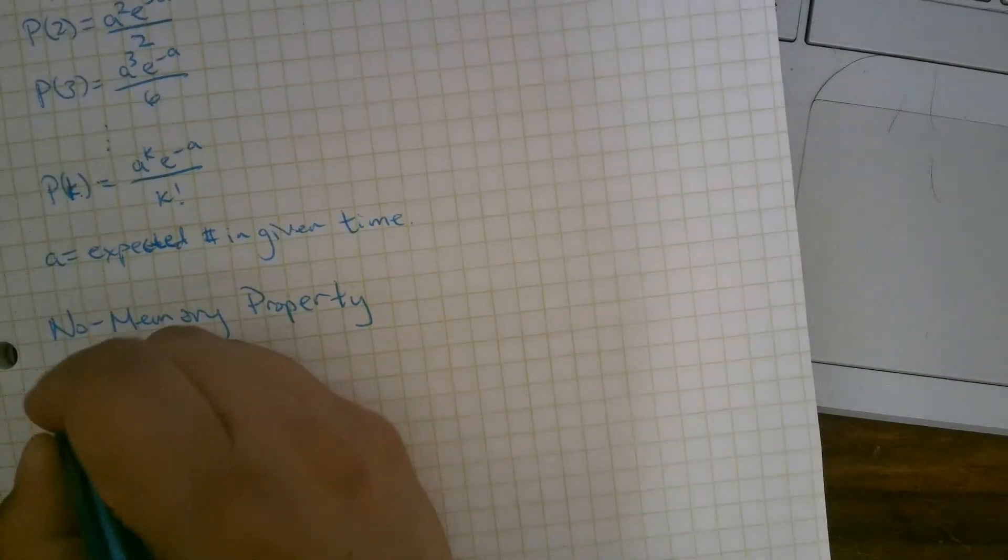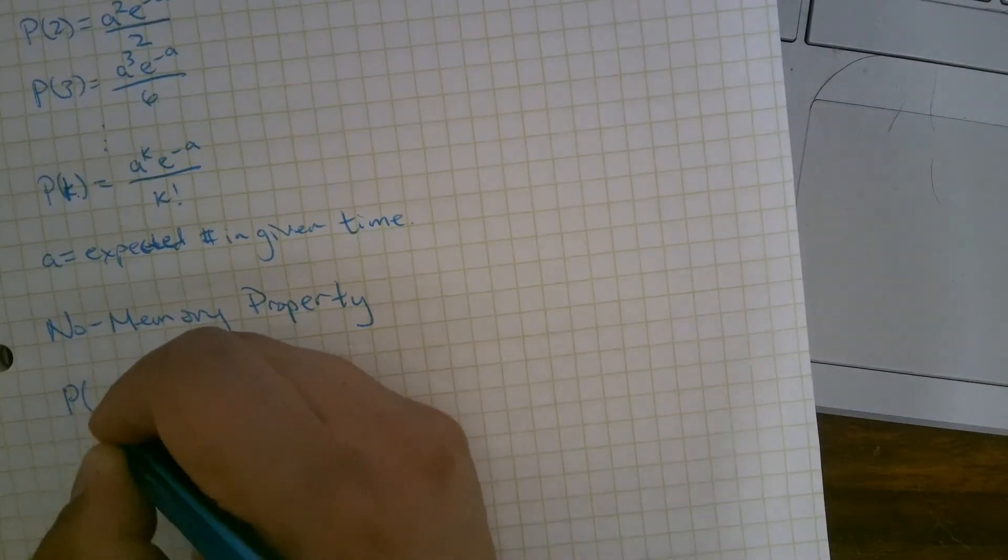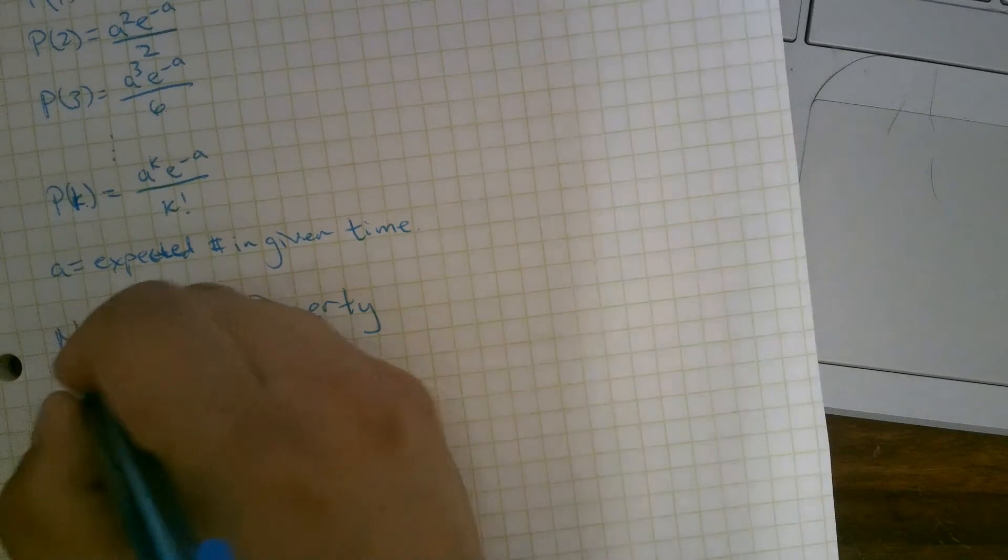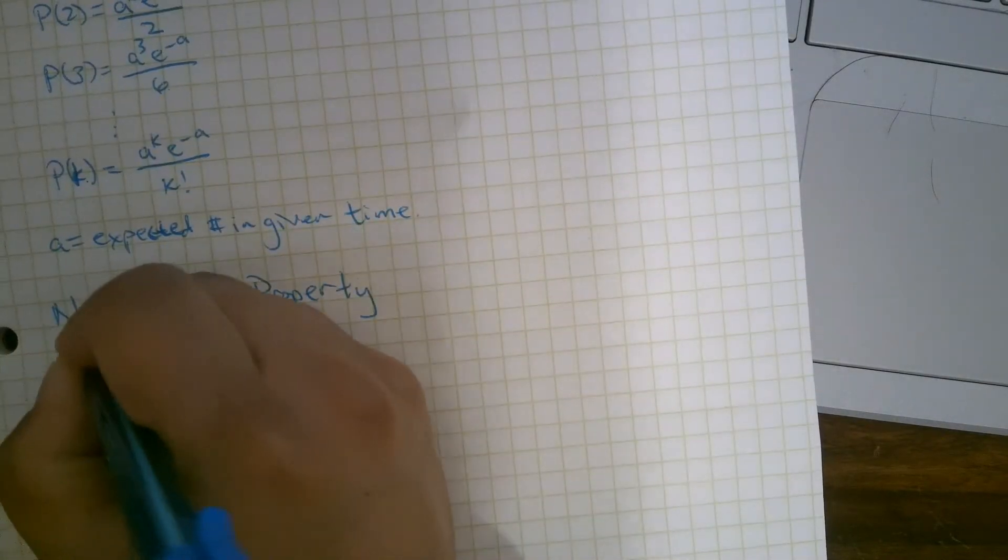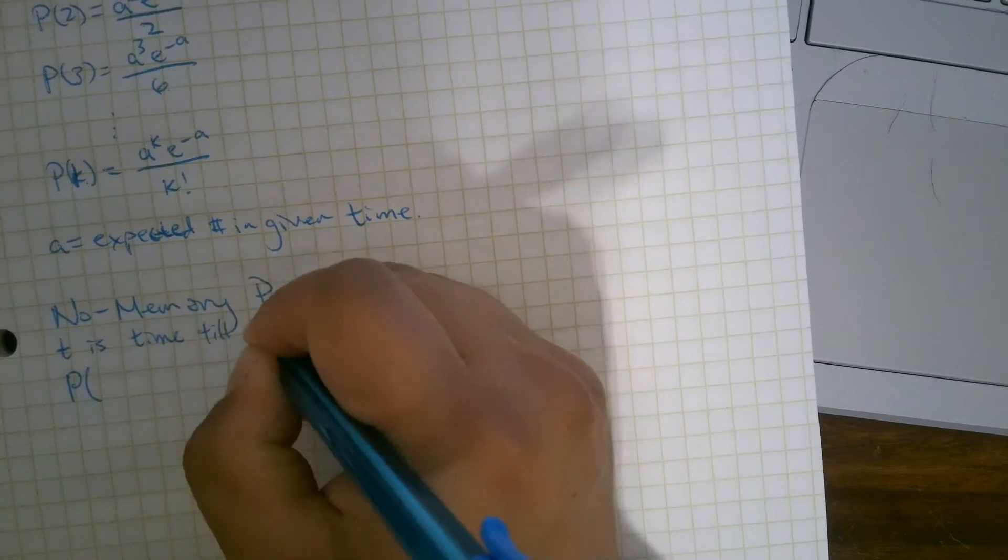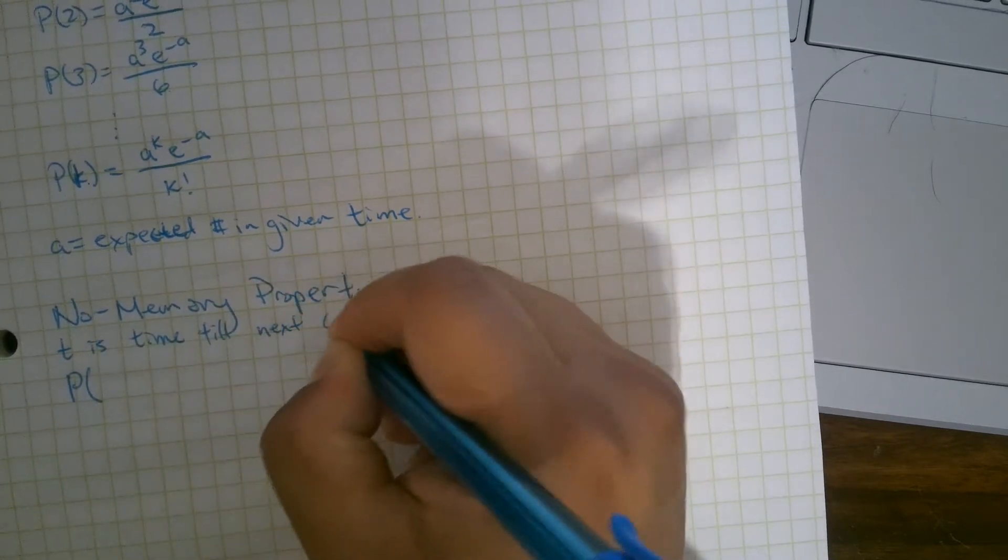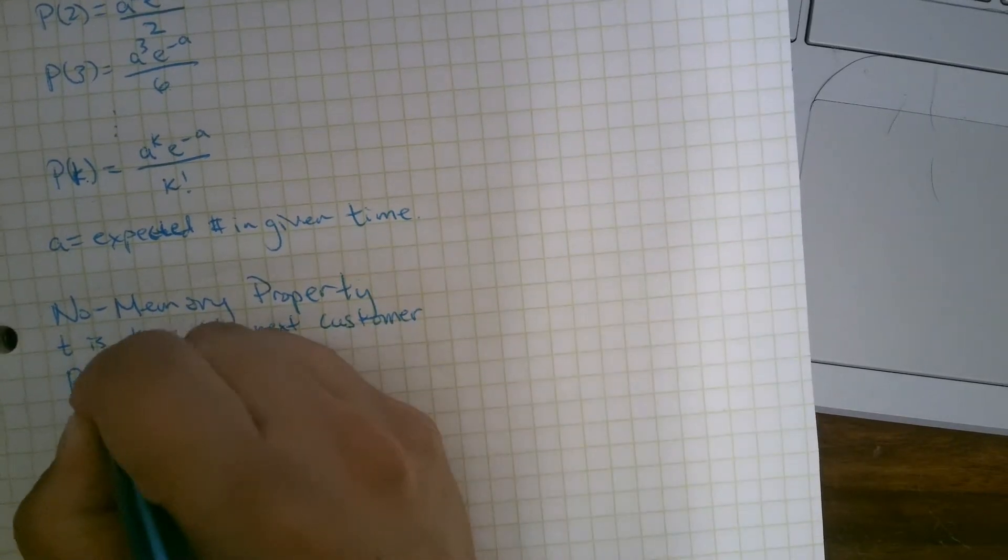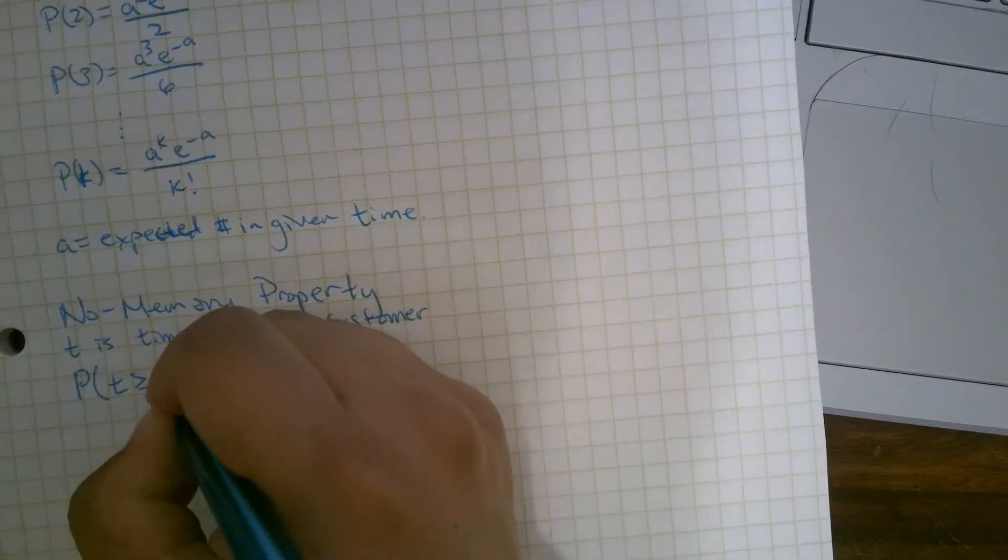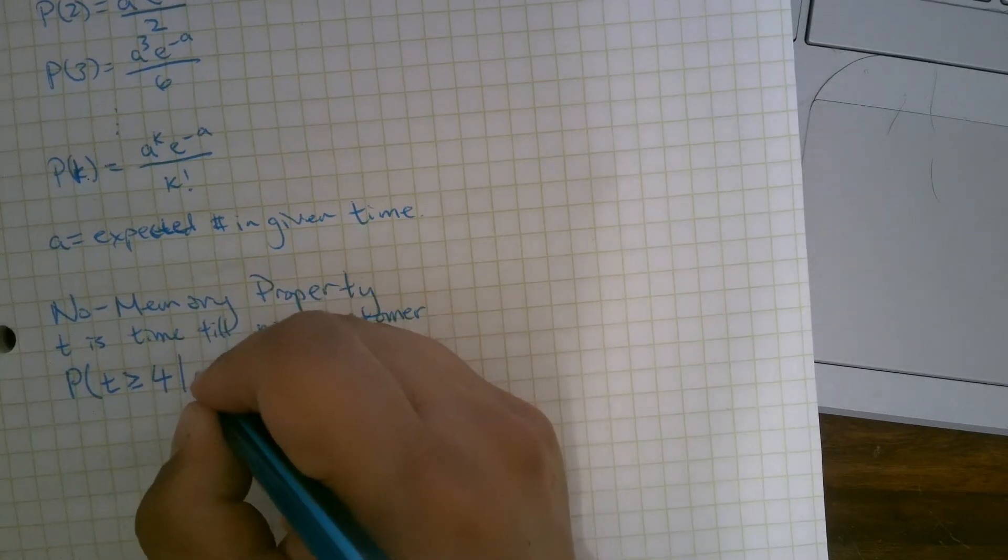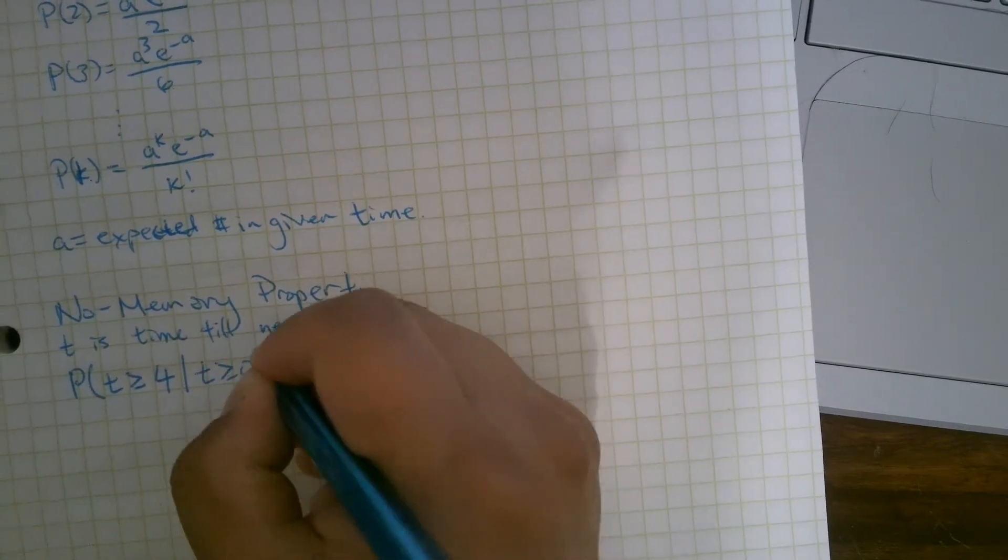So what does that mean in math? Like the probability, for example, let's look at the probability of T is time till next customer. Then the probability that time is greater than or equal to, let's say, 4, given probability times greater than or equal to 0, which is always true.